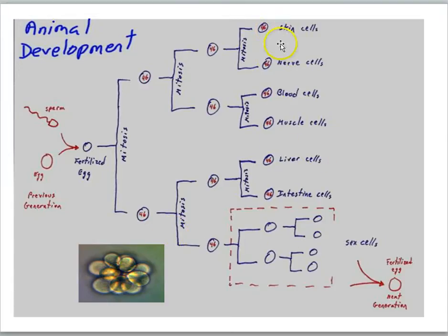At the right side here, what we would have is all the cells of the adult body, or the baby to begin with, but then it'll grow up into an adult. And notice we've identified this one up here as the skin cell, nerve cell, blood cell, muscle cell, liver cell, intestine, etc.